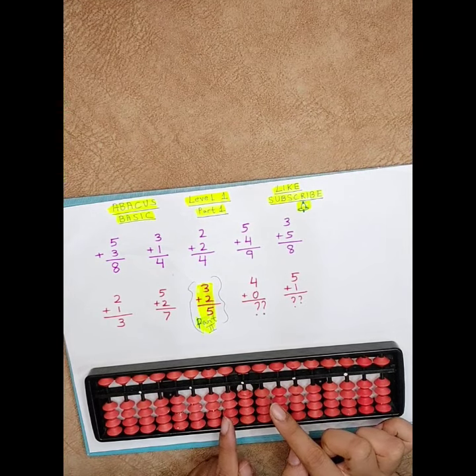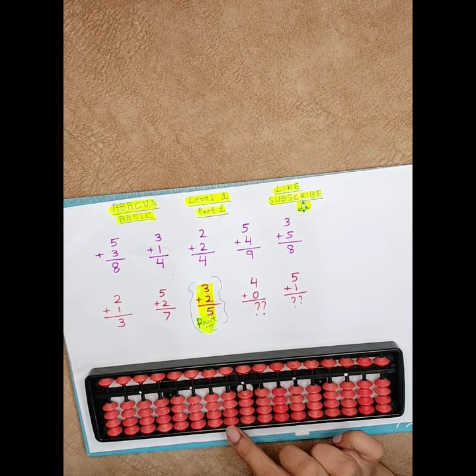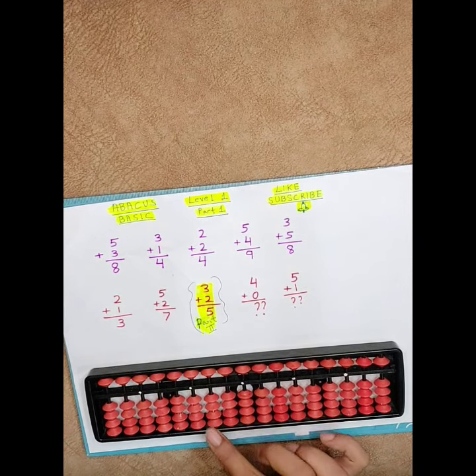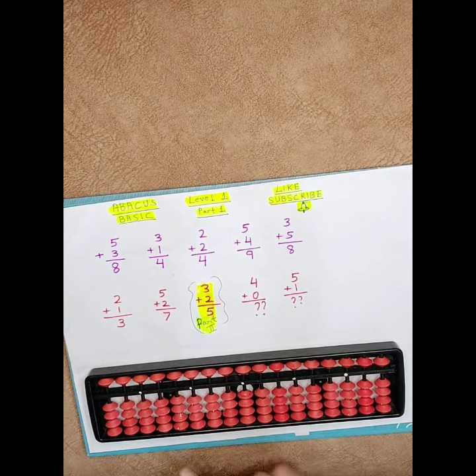This denotes ten's place. This rod denotes hundred place. This denotes thousand place and so on.